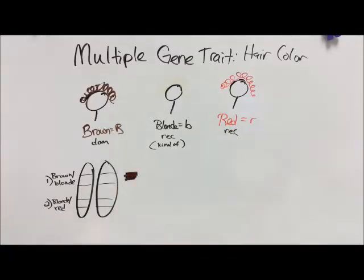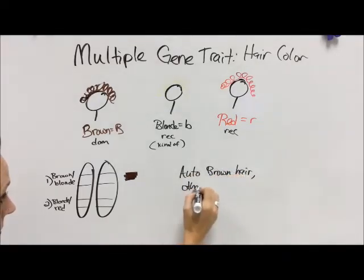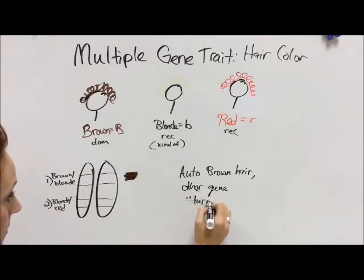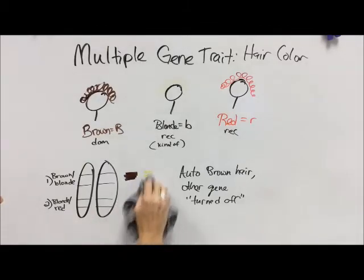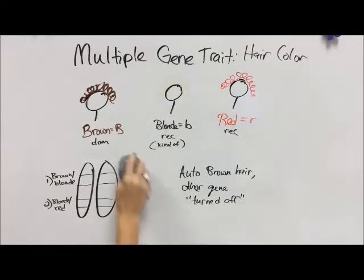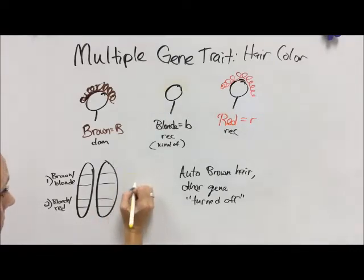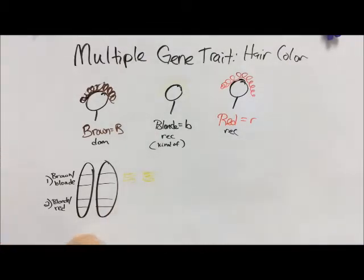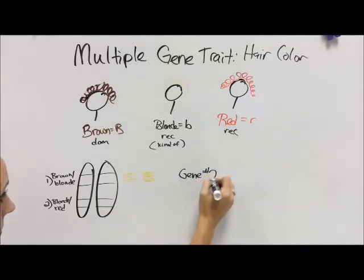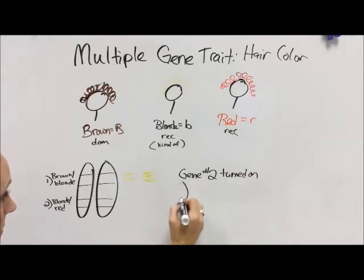Just like before, gene one is the gene that will turn on gene two. So if you have one brown on the first gene, you have automatic brown hair — the other gene is turned off. So if you have a brown and a blonde on gene one, and then a blonde and a blonde on gene two, it doesn't matter — you have brown hair, because brown is super powerful. If you have two brown on gene one, same scenario, you would have brown hair. The only way to get blonde or red hair is if the second gene is turned on, so you've got to have two blonde alleles on that top gene.